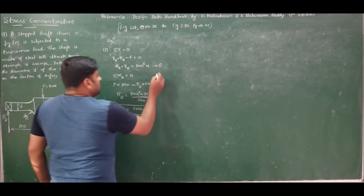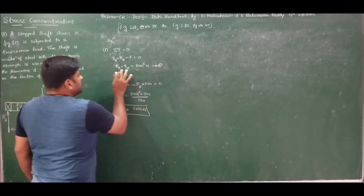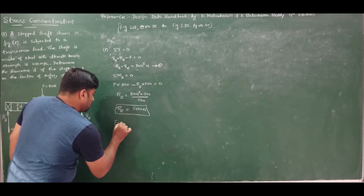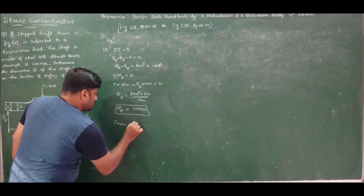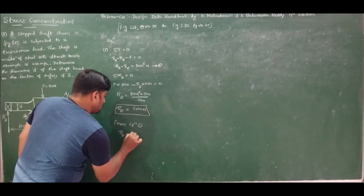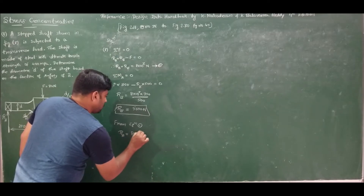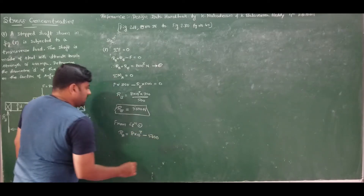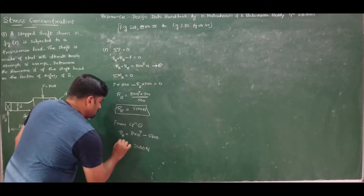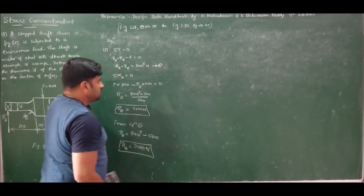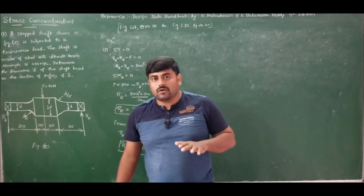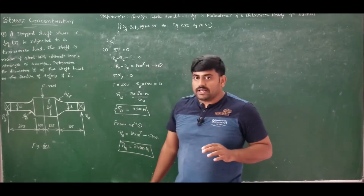Substituting Rb = 5600 N into equation 1, Ra = 8000 − 5600 = 2400 N. So we have found the support reactions: Ra = 2400 N and Rb = 5600 N.